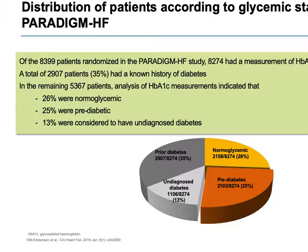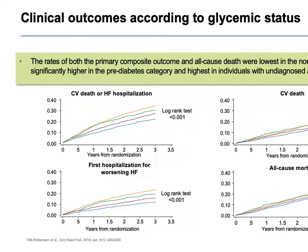Looking at a pie chart of the diabetic patients enrolled, some were pre-diabetic, some had frank diabetes, and a significant number had not even been diagnosed. Even in the western world, undiagnosed diabetes is a problem — it's not limited to Asia, Africa, or Latin America. The Paradigm HF study enrolled patients from different parts of the world, reflecting a truly global picture.